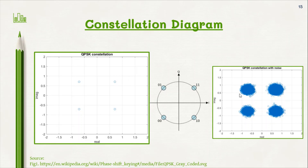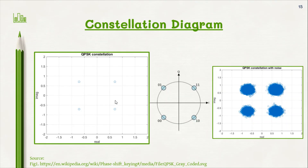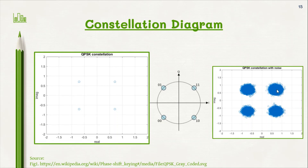I have plotted two constellation diagrams. The ideal constellation diagram shows four distinct symbols in the complex plane. But practically, due to noise, the amplitude and phase of the modulated carrier wave varies. Hence for a symbol, instead of getting a single point, we get a range of points which resemble a constellation. But as long as the two constellations do not overlap each other, we can successfully retrieve the signal back.